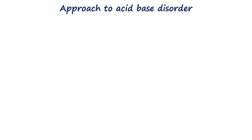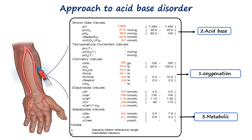Arterial blood gas, or ABG, gives vital information about oxygenation, ventilation, and acid-base status. We have discussed the oxygenation part in previous videos of this playlist. In this video, we will look into the approach we take to interpret acid-base balance.